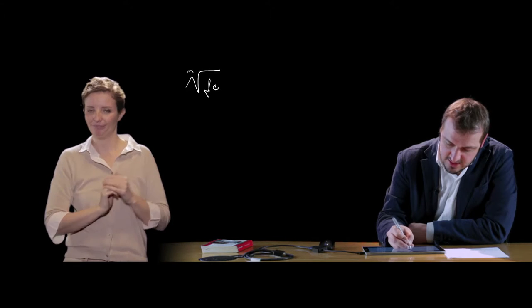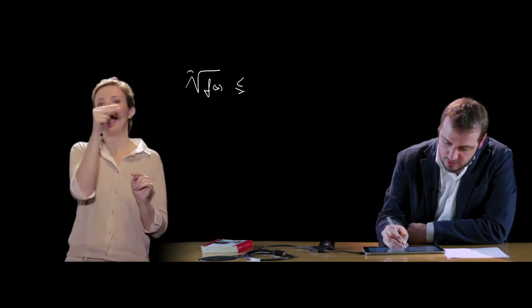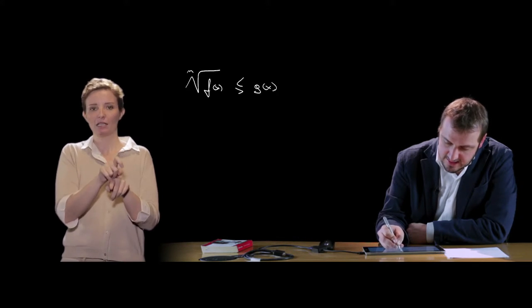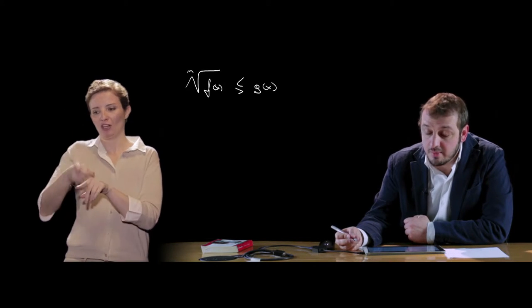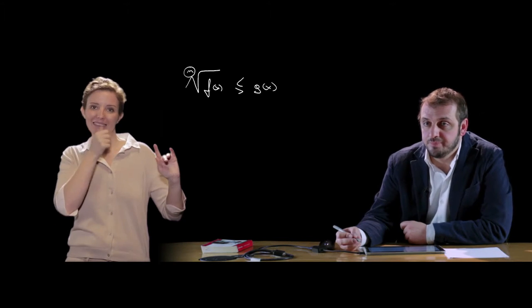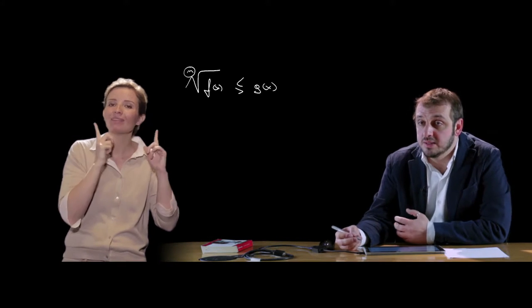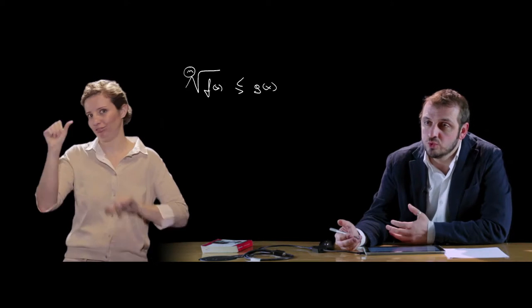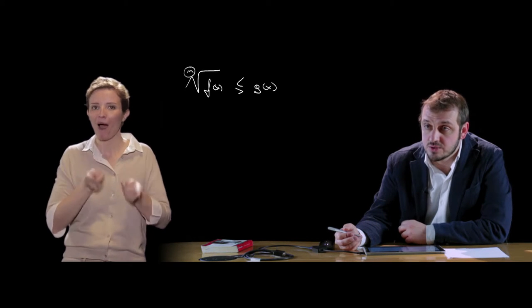Per quanto riguarda invece le disequazioni irrazionali, è necessario anche in questo caso distinguere alcuni aspetti. In generale, noi abbiamo la radice ennesima di f(x) maggiore o minore di g(x). Questa è la tipica disequazione irrazionale che dobbiamo andare a risolvere. La prima distinzione viene fatta su n perché a seconda del valore di n cambia completamente la procedura da applicare.